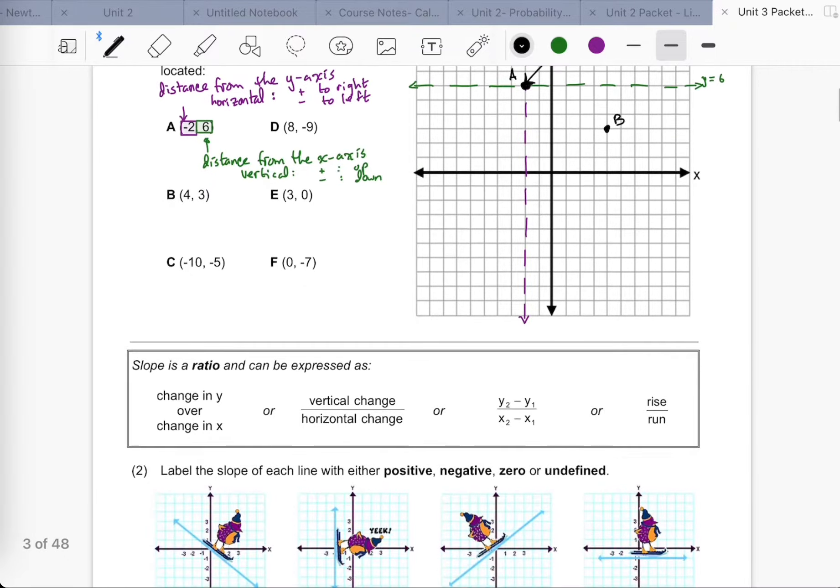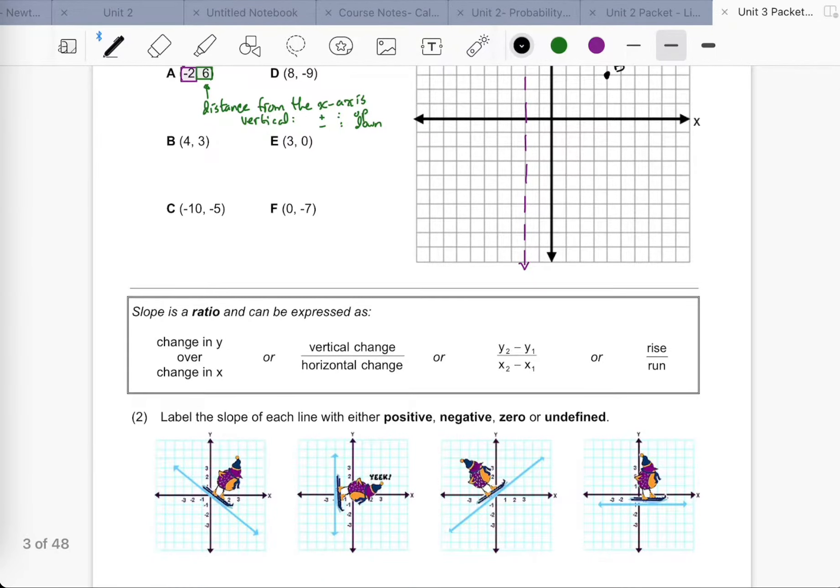Along those lines is slope. You could plot the rest of the points. Because like I said, you've plotted points in the past. That's not anything new. Same thing with finding slopes.